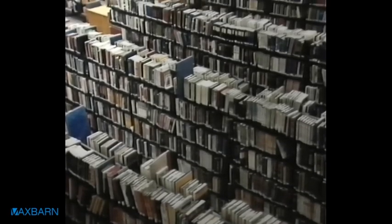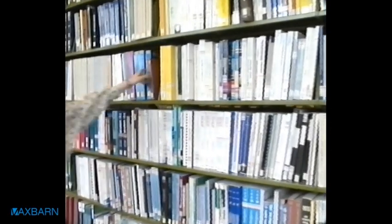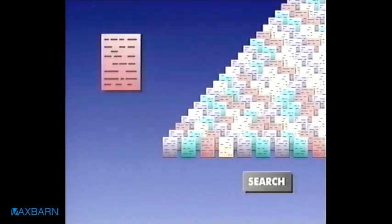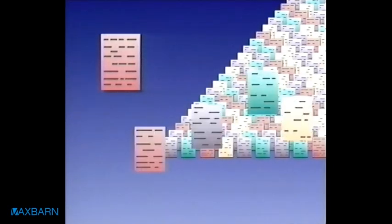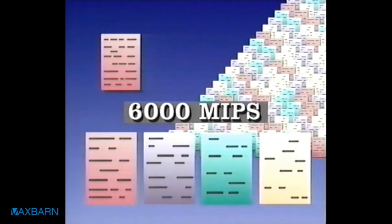Database applications often require millions of individual documents to be searched. Finding the right document is like finding a needle in a haystack. The Connection Machine categorizes documents and stores them so that they can be retrieved with simple English language queries. Documents themselves can be used to further guide the search for other documents on the same subject. To match the speed of the Connection Machine, a conventional mainframe would have to operate above 6,000 MIPS.